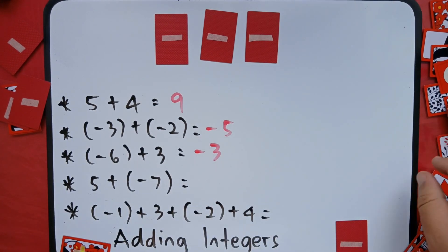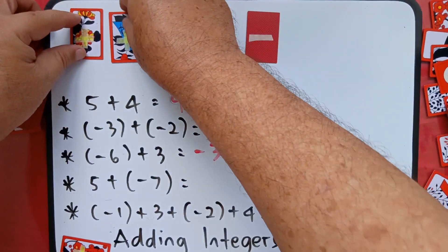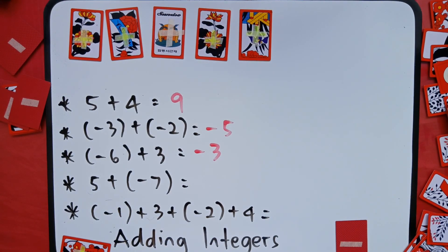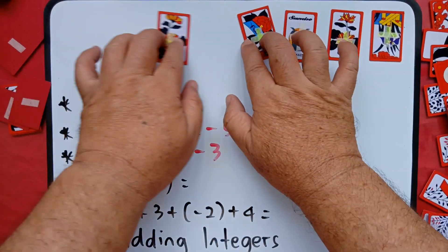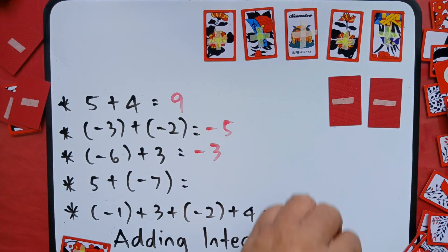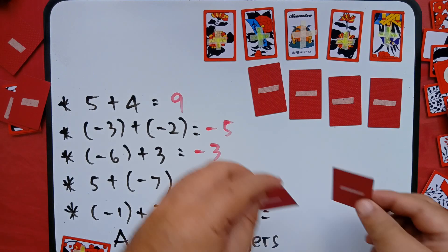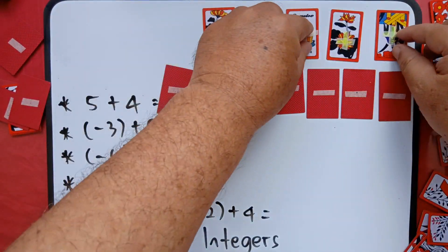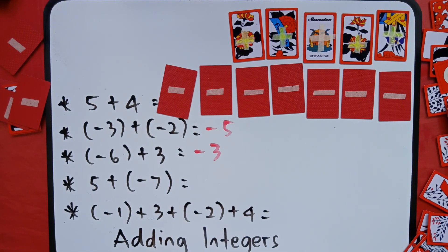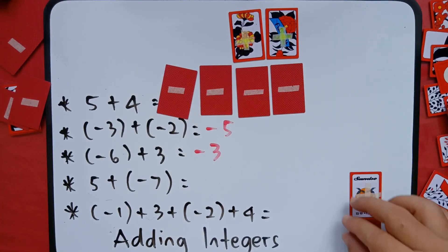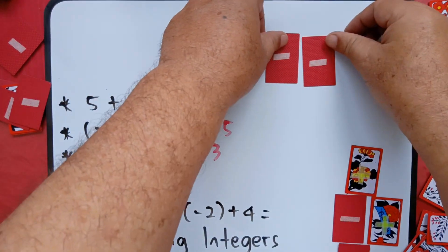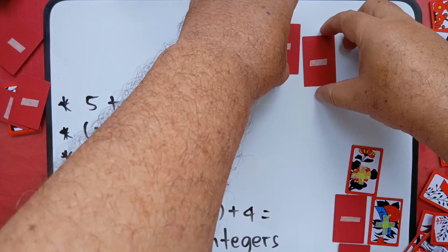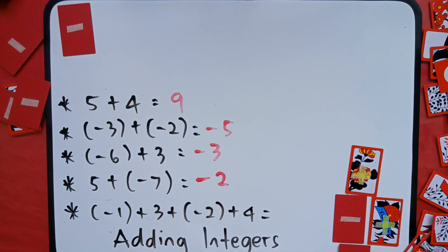Next: positive five plus negative seven. We have five positive cards, plus negative seven tiles. Now remove the neutral pairs — remove this pair, this pair, this pair, and so on. What remains are negative two cards.